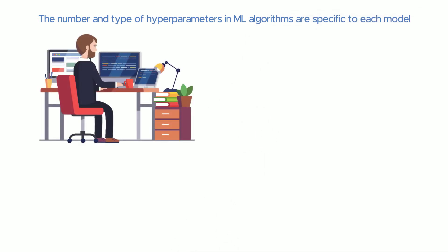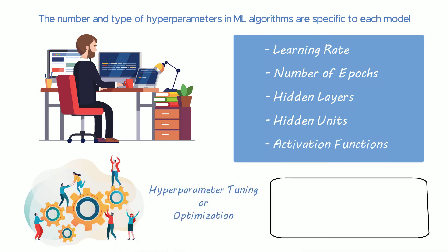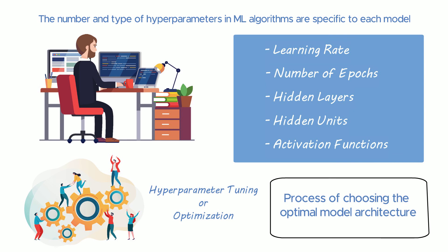Some examples of commonly used hyperparameters are learning rate, number of epochs, hidden layers, hidden units and activation functions. Hyperparameter tuning or optimization is the process of choosing the best model architecture.